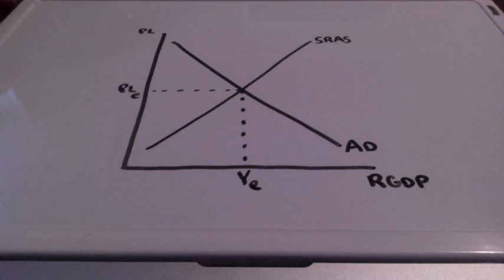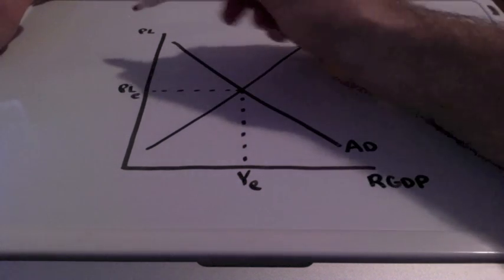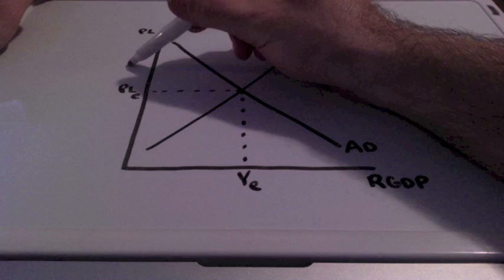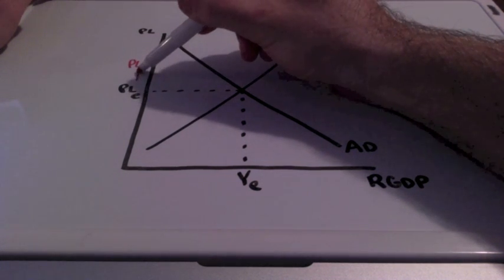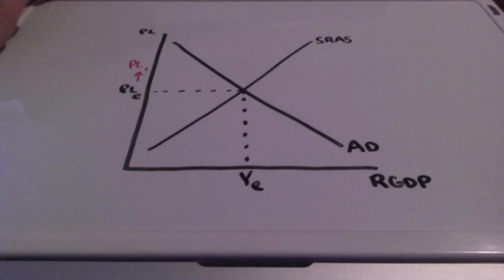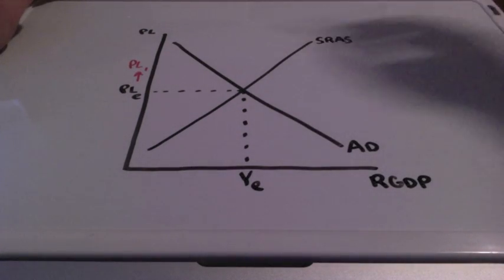Let's say that price levels increased from our equilibrium price to PL1. How is this going to impact both the short run aggregate supply curve and the aggregate demand curve?